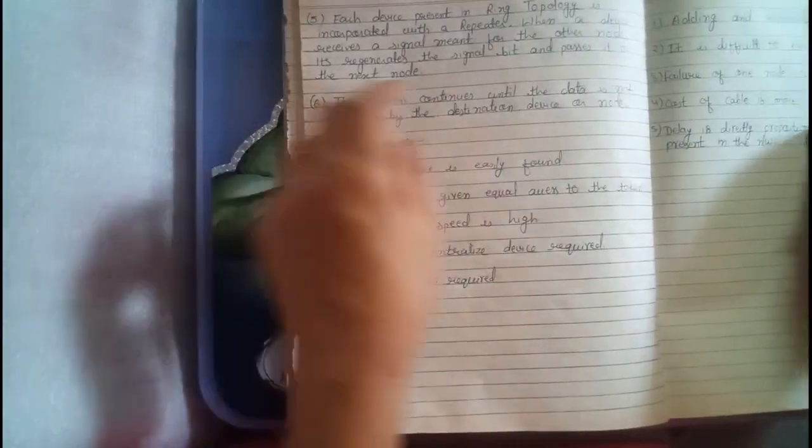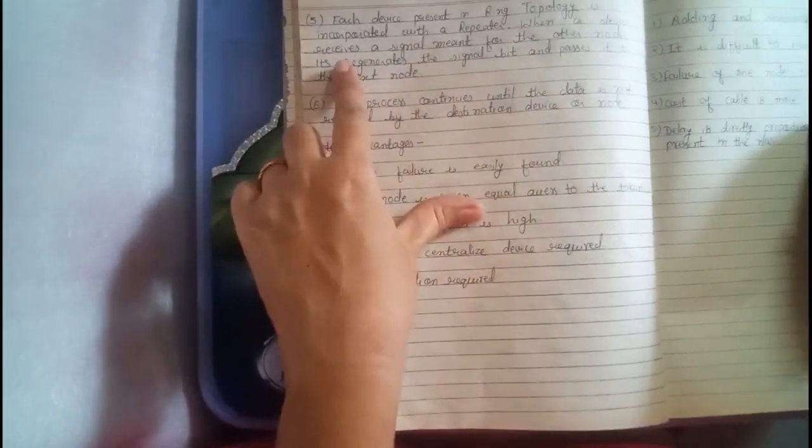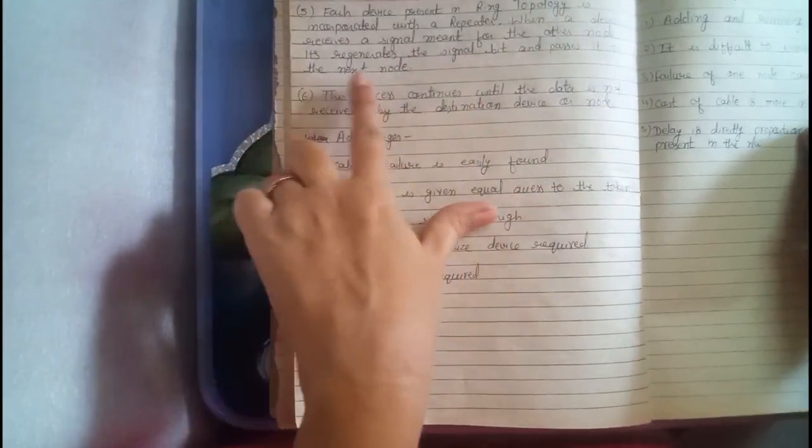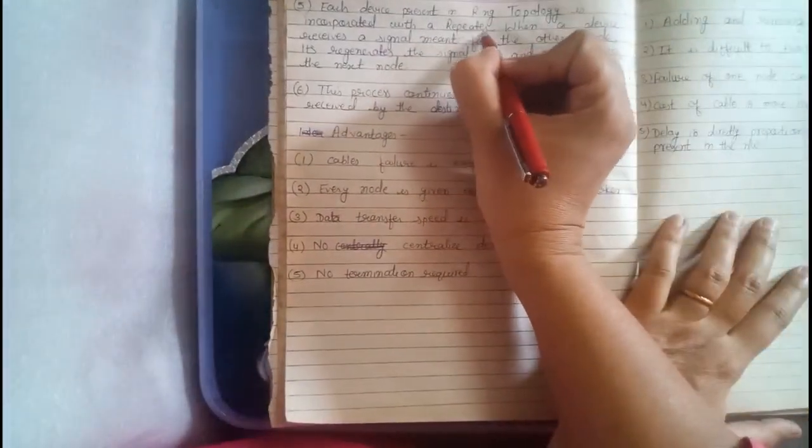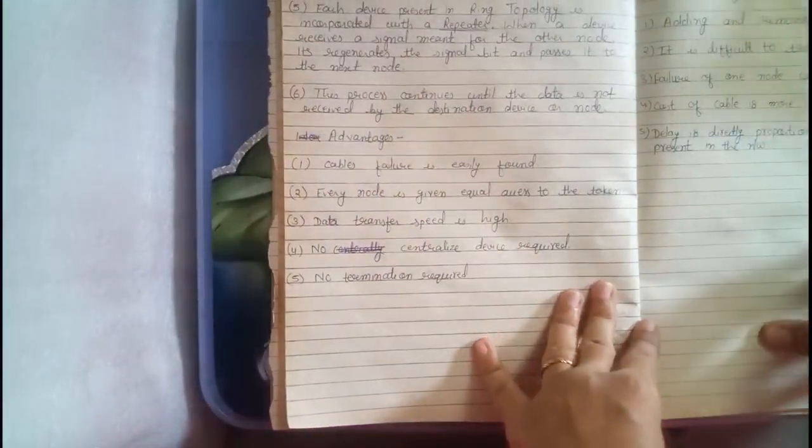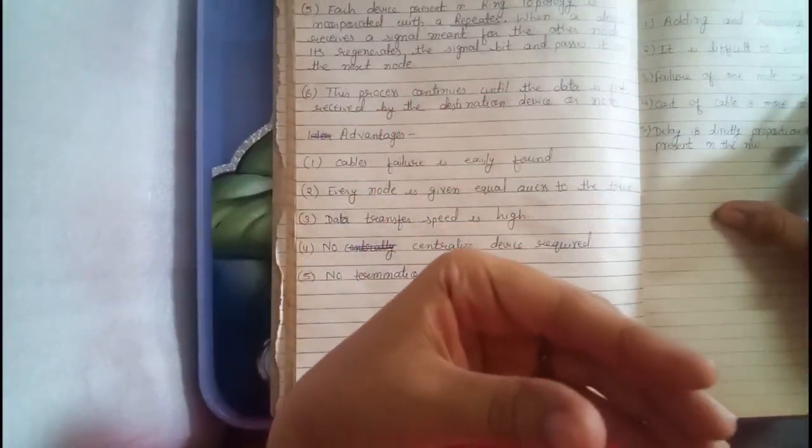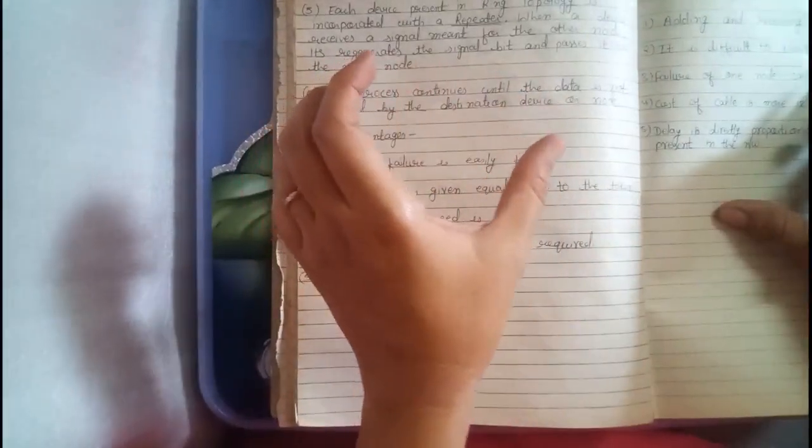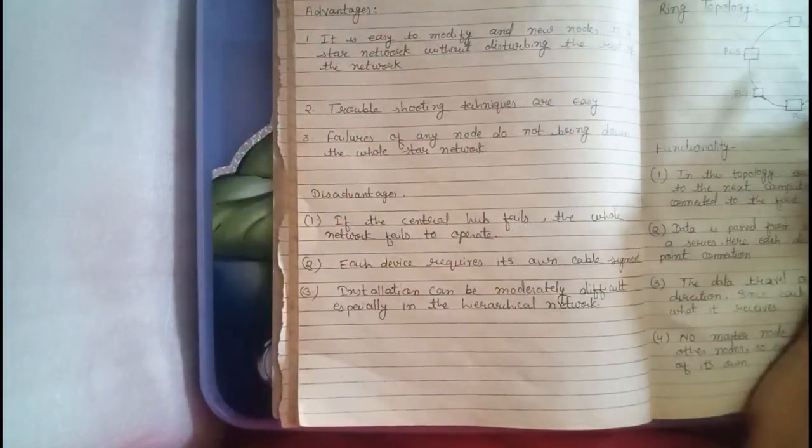Next point. Each device present in ring topology is incorporated with a repeater. When a device receives a signal, meant for the other node, it regenerates the signal bit and passes it to the next node. Here, there is a word repeater is used. Now, what is this word repeater meaning? Repeater is a device which will regenerate the weak signal. Suppose, because here data travel is happening.